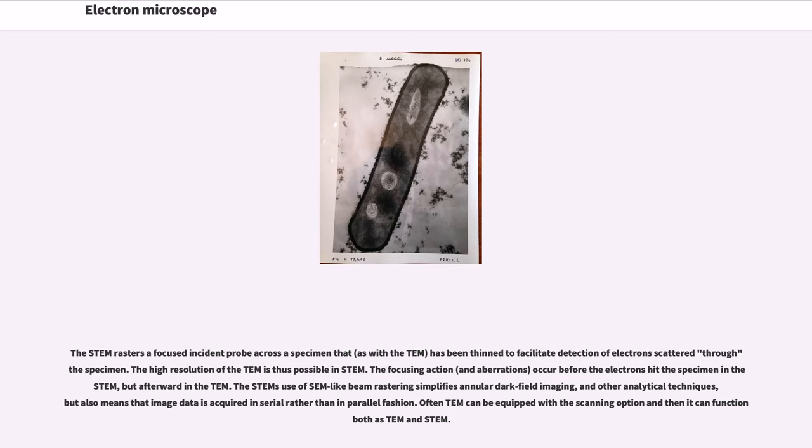The higher resolution of the TEM is thus possible in STEM. The focusing action, and aberrations, occur before the electrons hit the specimen in the STEM, but afterward in the TEM. The STEM's use of SEM-like beam rastering simplifies annular dark field imaging, and other analytical techniques, but also means that image data is acquired in serial rather than in parallel fashion. Often a TEM can be equipped with the scanning option and then it can function both as TEM and STEM.